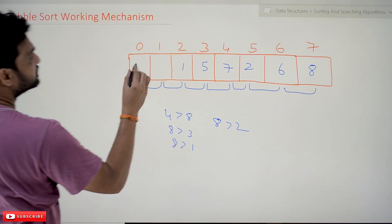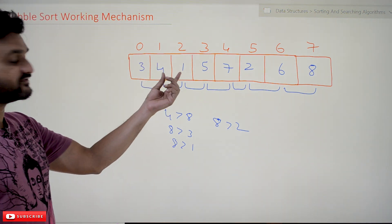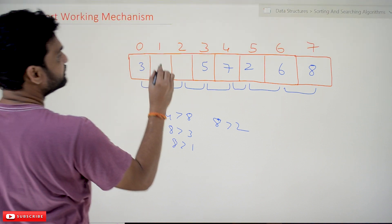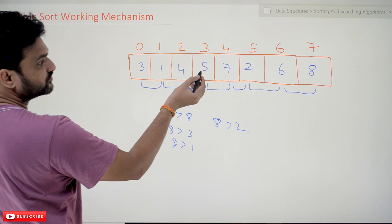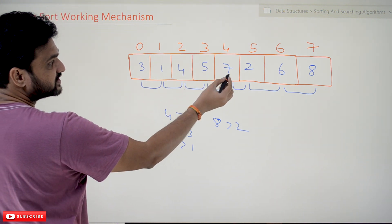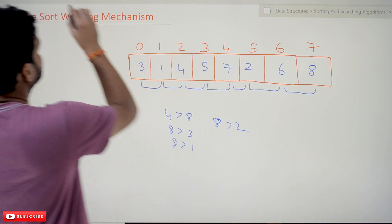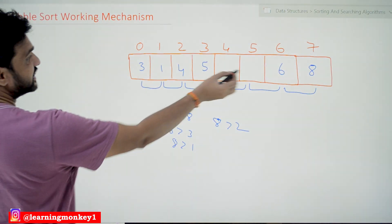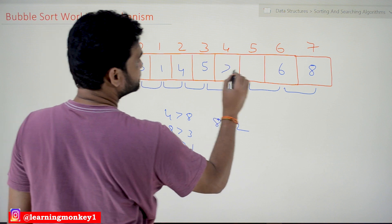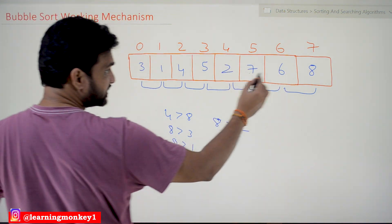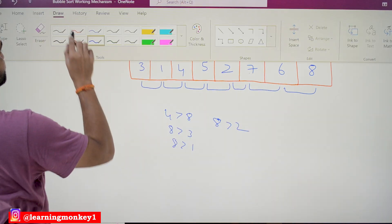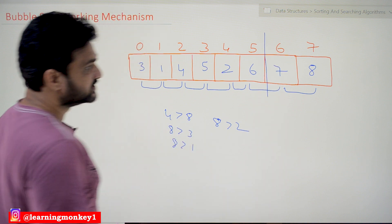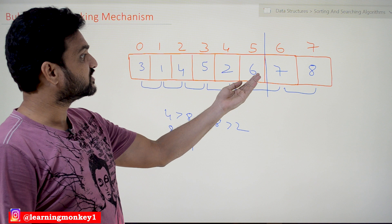After swapping, 3 is here and 4 moves forward. Then 4 and 1: is 4 greater than 1? Yes, so 1 is swapped here and 4 moves. Then 4 greater than 5? No. 5 greater than 7? No. 7 greater than 2? Yes — 7 and 2 get swapped. The largest element for this iteration is 7; it has been identified. Then 7 greater than 6? Yes, so they swap again. 7 has taken its sorted position. Now these two elements, 7 and 8, are in sorted order.